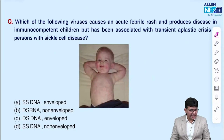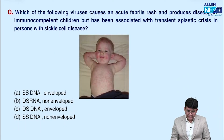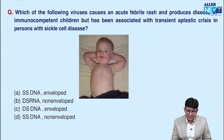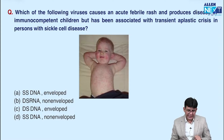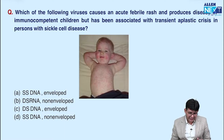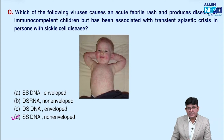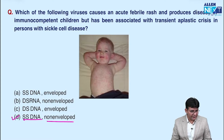Now coming to the second question: which of the following viruses causes an acute febrile rash and produces disease in immunocompetent children, but has been associated with transient aplastic crisis in persons with sickle cell disease? The answer options are: single-stranded DNA enveloped, double-stranded DNA, RNA non-enveloped, double-stranded DNA enveloped, or single-stranded DNA non-enveloped. The answer is D — it's a single-stranded DNA virus and it is non-enveloped.